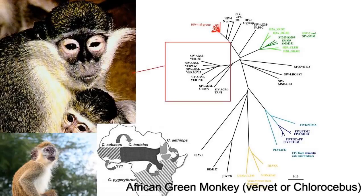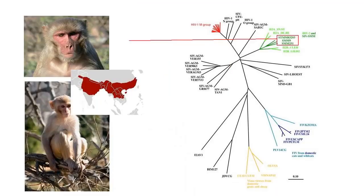For example, the simian immunodeficiency virus strain that infects African green monkeys doesn't usually cause much disease to its host. The rhesus macaque also has a strain of SIV that causes little or no disease.